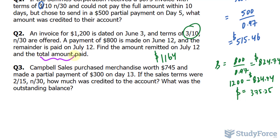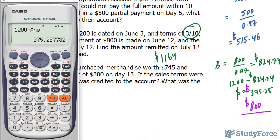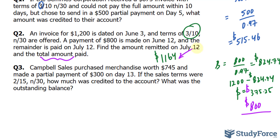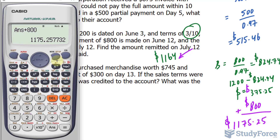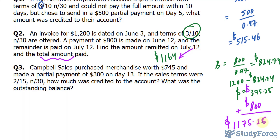We are also asked to find the total amount paid. We know they already paid $800, and they still have to pay $375.25. Adding $800 to $375.25, we end up with $1,175.25 — or rounding to two decimal places, $1,175.26. As you can see, they ended up paying a little more than if they had paid the complete amount at the very beginning.